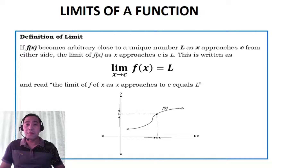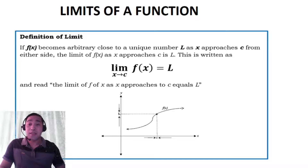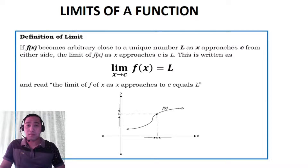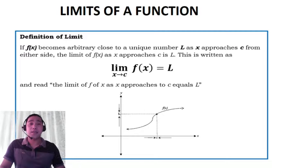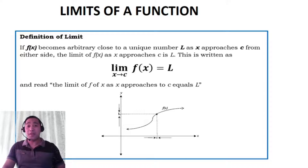Before we are going to evaluate limits of a function using table of values and graphically, let us define first what is a limit. By definition, if f of x becomes arbitrarily close to a unique number L, as x approaches C from either side, the limit of f of x as x approaches C is equal to L.